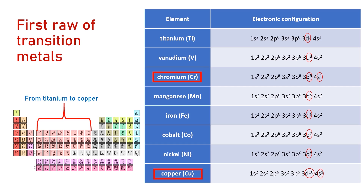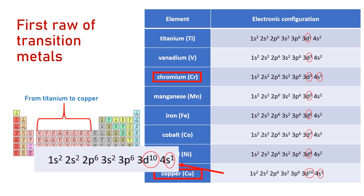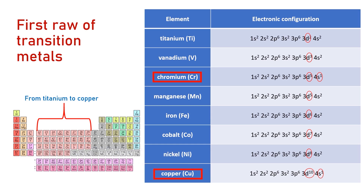Until we reach copper, we can see that it has 4S filled with only one electron and the 3D subshell is completely filled with 10 electrons. So, why does the electron configuration of chromium and copper differ from what we expect?